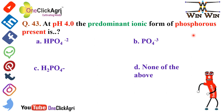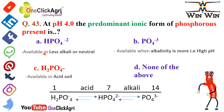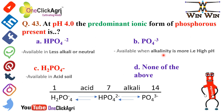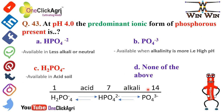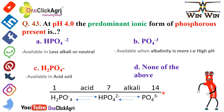Question number 43: At pH 4, the predominant ionic form of phosphorus present is H2PO4 minus. HPO4 2- is available in less alkaline or neutral soil. PO4 3- is available when alkalinity is more, i.e., at high pH. In the pH range of 1 to 14: in acidic conditions (1 to 7), H2PO4 minus is available; in neutral or less alkaline soil, HPO4 2- is available; and in highly alkaline or high pH conditions, PO4 3- is available — please remember this.